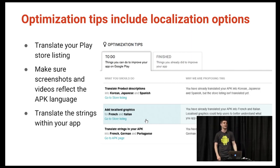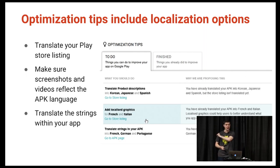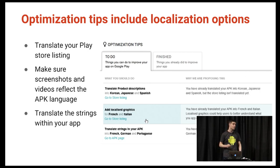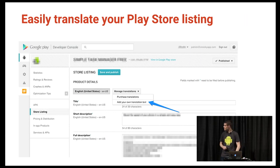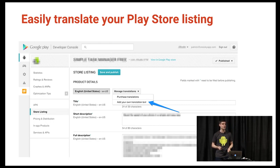Within the developer console, you already have access to optimization tips and recommendations, which now include localization and internationalization options to help you take your app global. You can see recommendations bubbled up in the to-do section: translate your store listing, make screenshots and videos reflect your target APK language, and translate the actual strings within your app. If you don't provide translation text, Google Play will show an automated translation or the default language — but neither is ideal if your users have a local language preference.